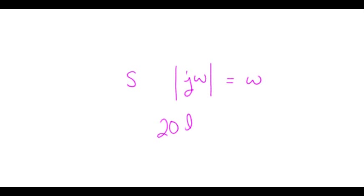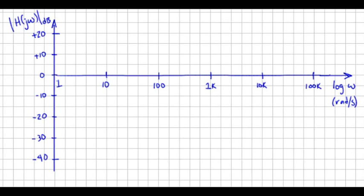If we do 20 log 10 of omega, and you say, well, at what frequency does this look like 0 dB? So I'm trying to find the place where it crosses the origin of our plot, and it does so when omega is 1 radian per second. So at 1 radian per second, that's where we have a crossing at 0 dB.